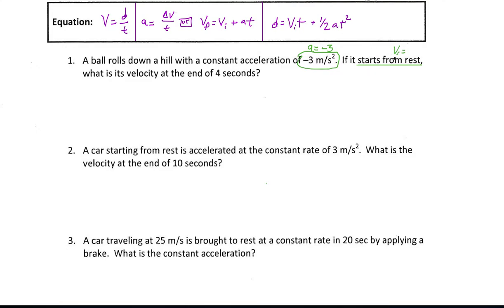The initial velocity would of course be zero meters per second, because it's starting from rest — it has a velocity, it's just a velocity of zero. We want to know what the final velocity is, so that would be the final, which we're not sure of, at the end of four seconds. So now I know my acceleration, I know something about both initial and final velocities, and I know my time is four seconds. It's good practice to keep your units in there.